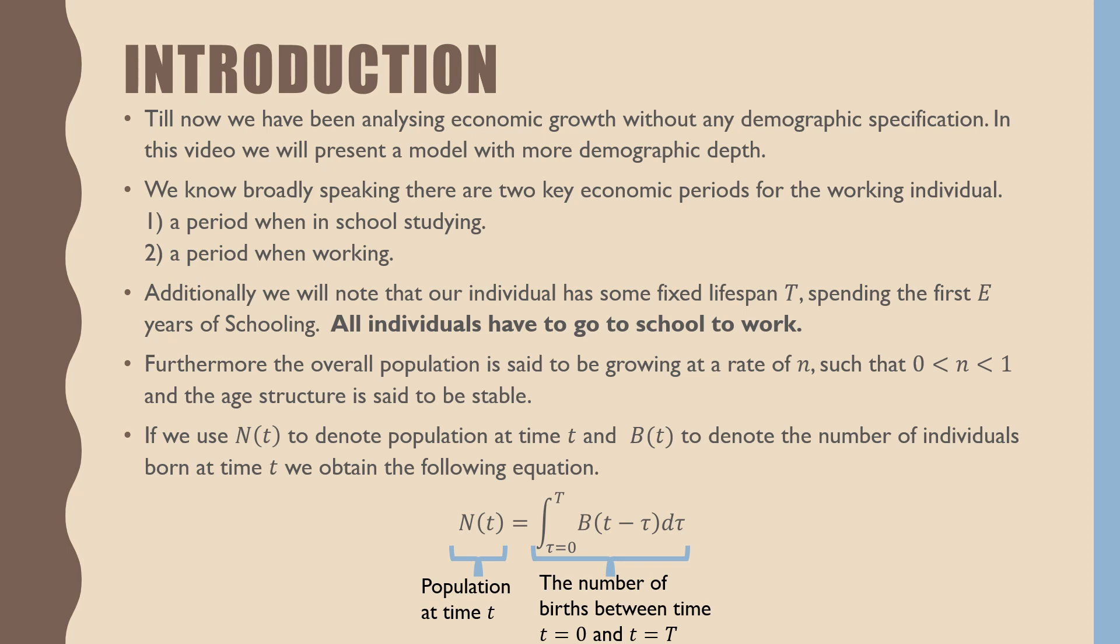we obtain the following equation, which is the population at time t, N, is equal to the number of births between time t equals 0 and time t equals capital T.